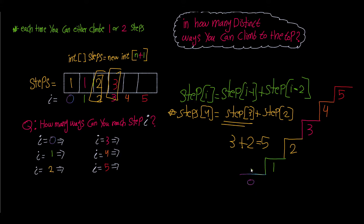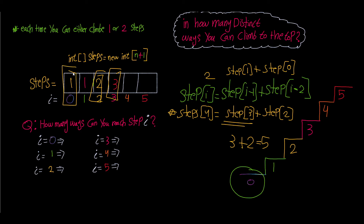This is also why we included step zero. When we ask how many ways to reach step two, we say steps[2] = steps[1] + steps[0]. We know steps[0] = 1 and steps[1] = 1, so 1 + 1 = 2. Step zero serves as the necessary base case to make the recurrence work correctly from the very beginning.